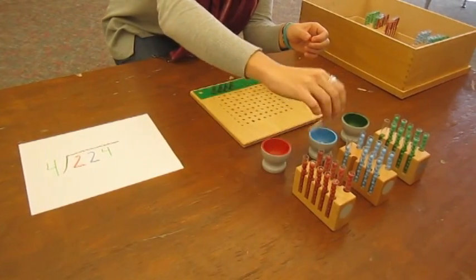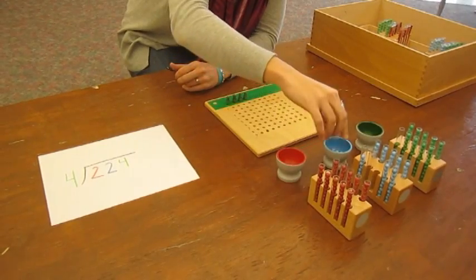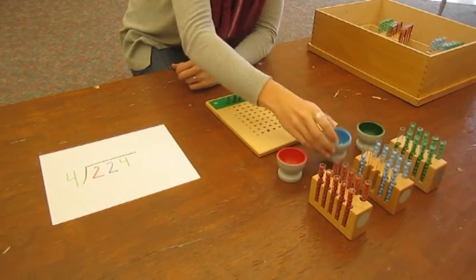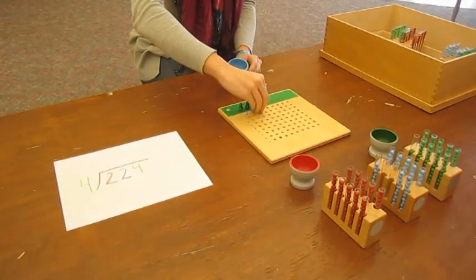So ten tens, ten more tens. And we are going to distribute our tens evenly to our four skittles.